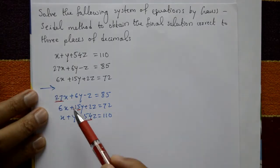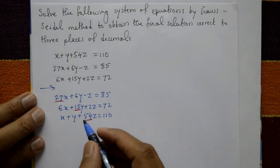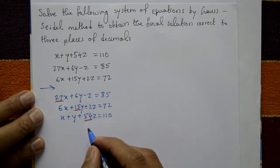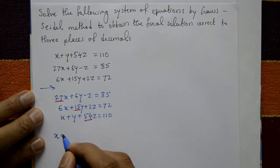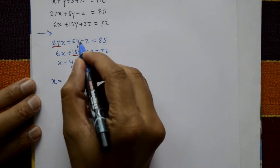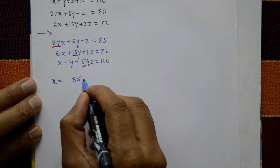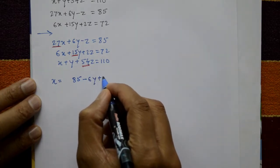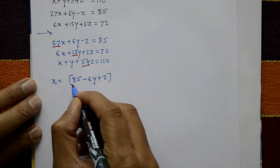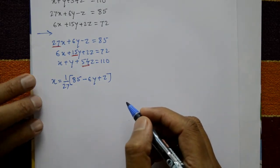This arrangement is called diagonally dominant. Now, from the first equation, express x: x = (1/27)(85 − 6y + z). This is the x formula.